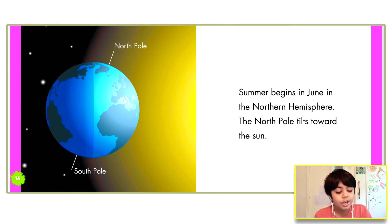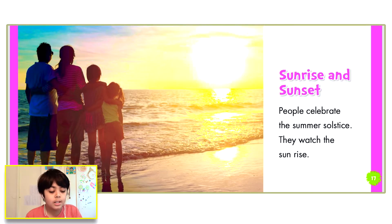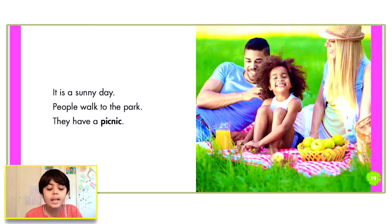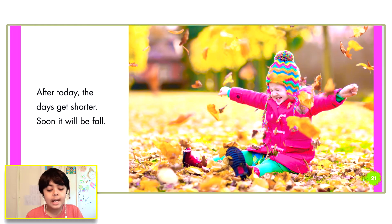The north pole tilts toward the sun — sunrise and sunset. People celebrate the summer solstice. They watch the sun rise. It's a sunny day. People walk to the park and have a picnic. After today, the days get shorter. Soon it will be fall.